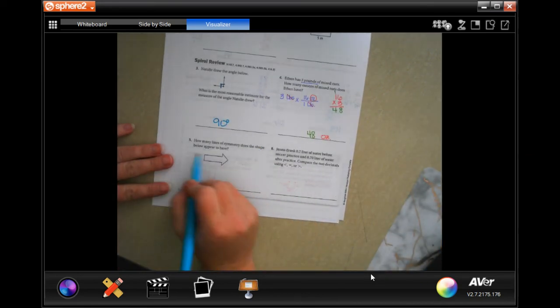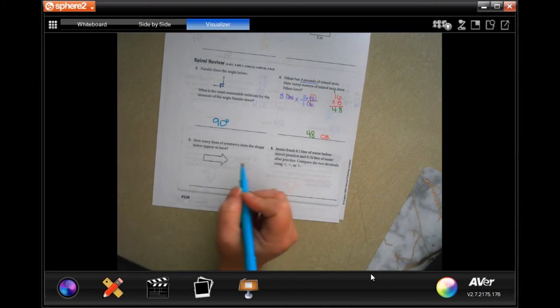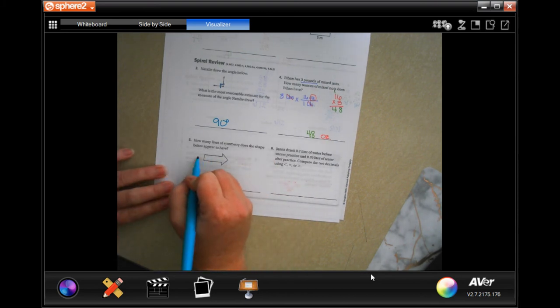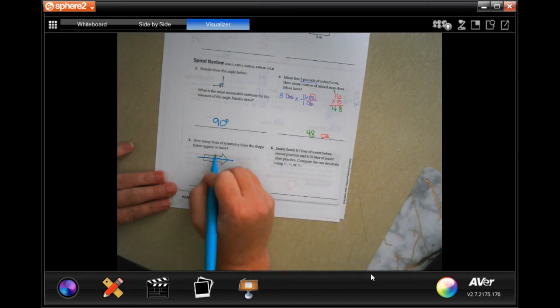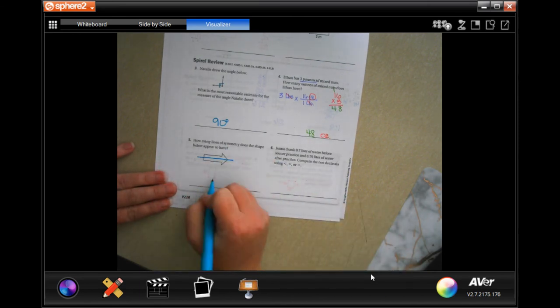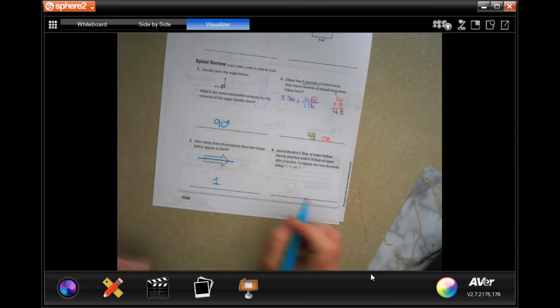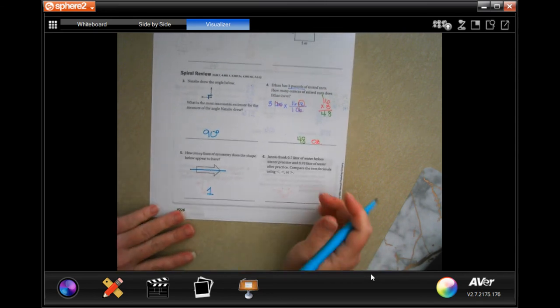How many lines of symmetry does the shape below appear to have? Well, I know that I can cut it straight down the middle here and I can fold it in half. But I can't cut it here, I can't cut it there, and I can't cut it there. So, one. All done.